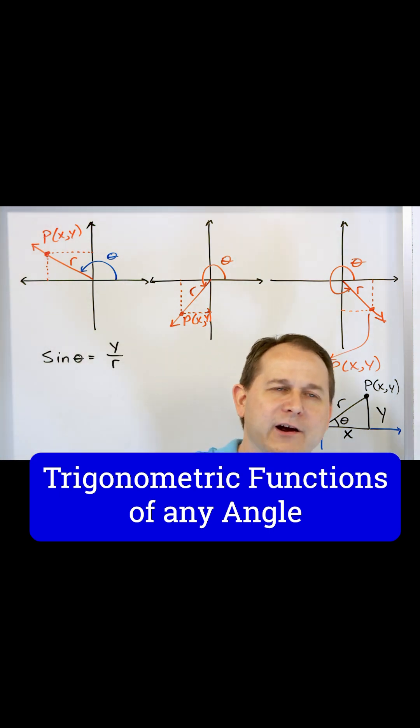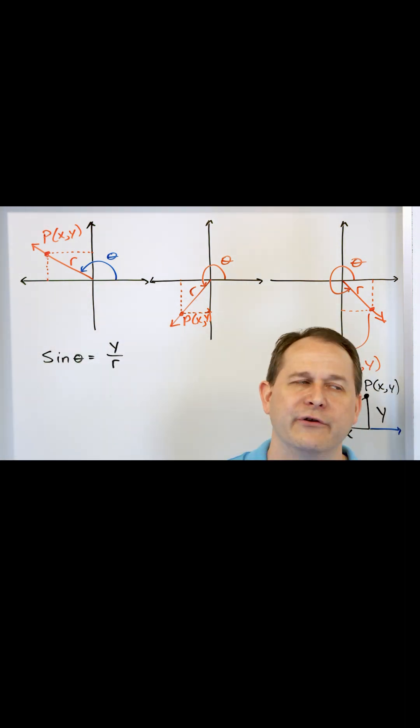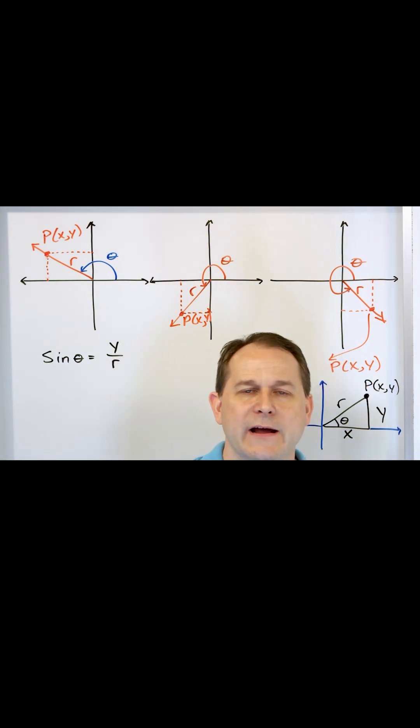In terms of a triangle, we called it opposite over hypotenuse, which we called y over r. Here, it's exactly the same definition: the y value divided by r. That is the definition of the sine.